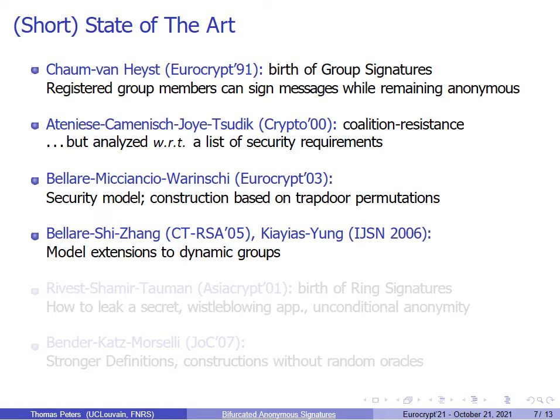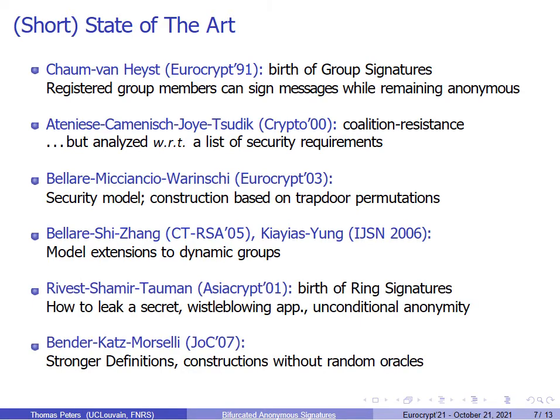For ring signatures, the concept was introduced in 2001 by Rivest, Shamir, and Tauman. The purpose was to show how it is possible to leak a secret and keep anonymity in an unconditional, statistical way, and the application was to allow whistleblowing. The security was enhanced in 2007 by Bender, Katz, and Morselli, who gave stronger definitions and constructions in the standard model.